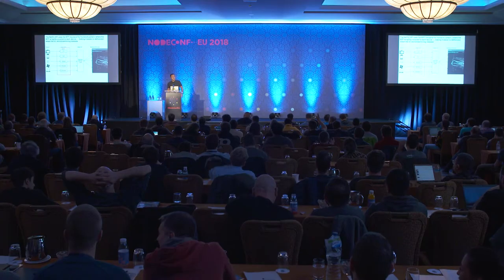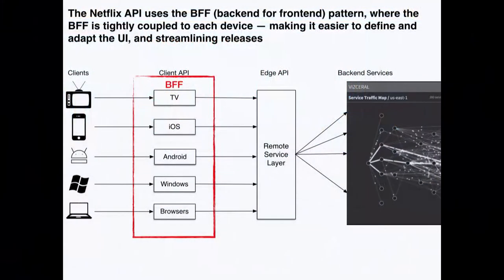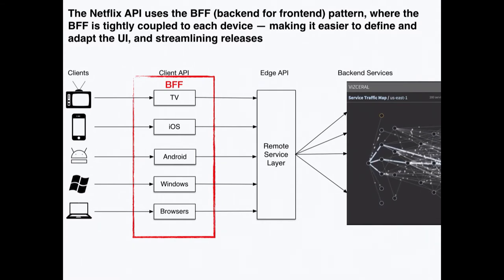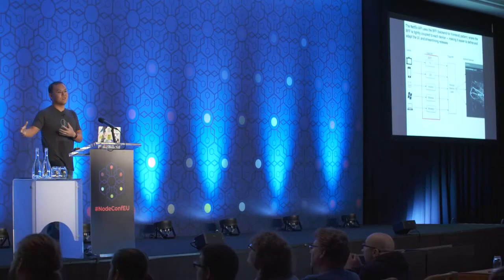We use something called the BFF pattern — the Backend-for-Frontend pattern. The big premise is that you have a client and a service that tightly fronts that client. The Netflix iOS app looks very different from the TV experience, which looks very different from the browser. You want these tightly coupled so that client engineers pushing code to devices are also pushing their services in lockstep, and you can make individual changes to your client and service without affecting the rest of Netflix.